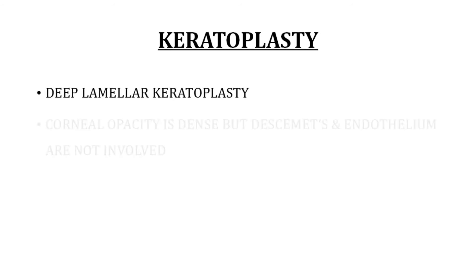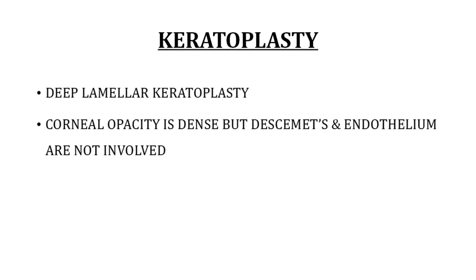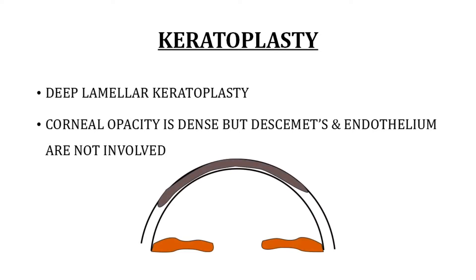Deep lamellar keratoplasty is done when the corneal opacity is dense and involves the majority of the stroma, but Descemet's membrane and the endothelium are not involved. In this procedure, the anterior layers of the cornea are removed and replaced with donor tissue while Descemet's and the endothelium are left undisturbed.